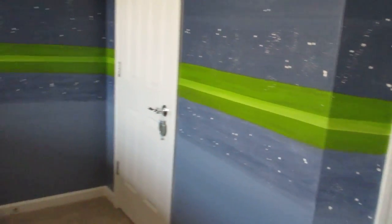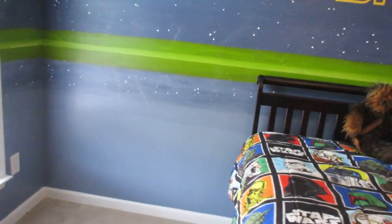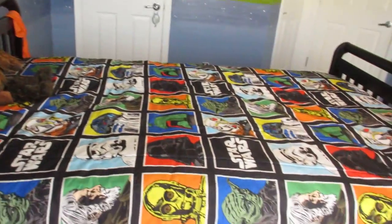And green is Asher's favorite color. So we had to have it as a green saber, which I think really looks great with this wall color too. And as you can see, he's got his little Star Wars bed.